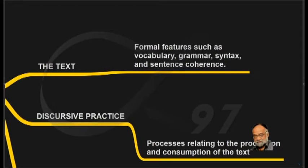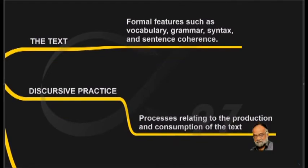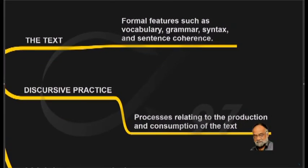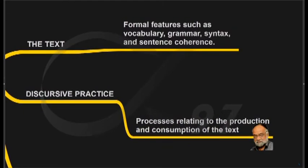When we come to the point called discursive practice, the next dimension in Fairclough's model, what does that mean? It means the processes relating to the production and consumption of the text. In simpler terms, if a person is speaking, that is a process. If the text is written down, well, writing it down or printing it out is a process. That is the production of it.